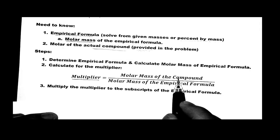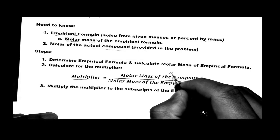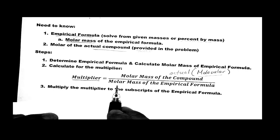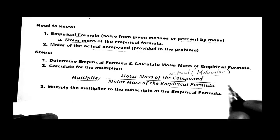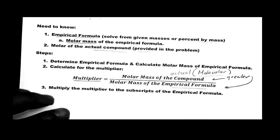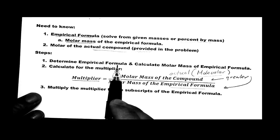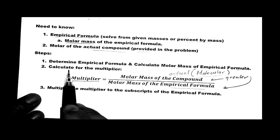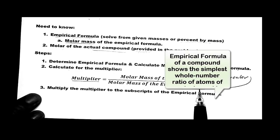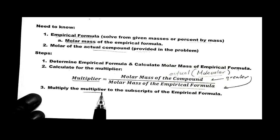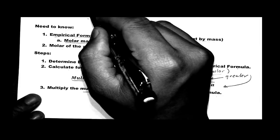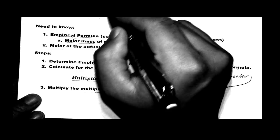We take the molar mass of the actual compound — the molar mass of the molecular formula — and divide it by the molar mass of the empirical formula. That gives a whole number multiplier. The steps are: first, determine the empirical formula; second, calculate the molar mass of the empirical formula; third, calculate the multiplier; and fourth, multiply the multiplier by each subscript in the empirical formula. For example, 6 × 1 = 6, 6 × 2 = 12, 6 × 1 = 6.